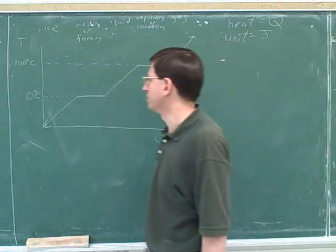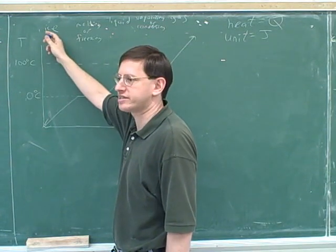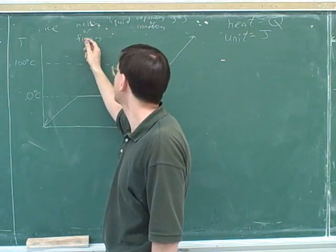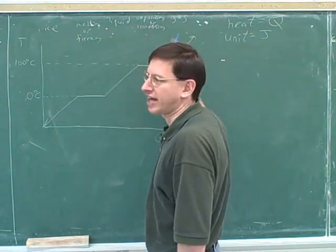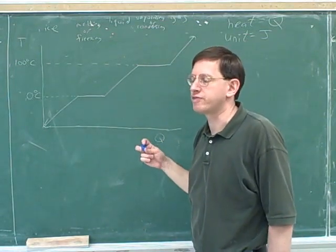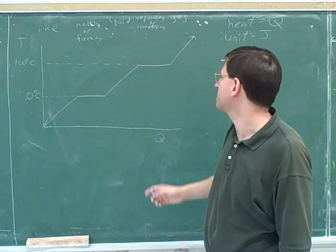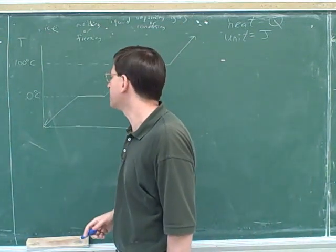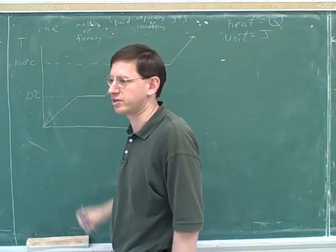It's important to label each region of this graph. In the first region, the substance exists as solid ice. Then there's a flat region representing melting or freezing depending on direction. Next is the liquid region, followed by a flat region representing vaporizing or condensing, and finally the gas region. This graph is not just for water — it applies to pretty much any substance. Any substance can exist in the gas, liquid, or solid phase, though other substances have different melting and boiling points.